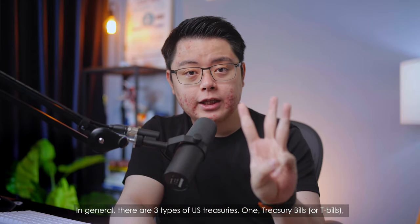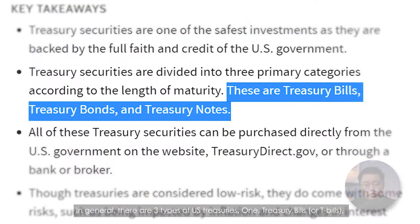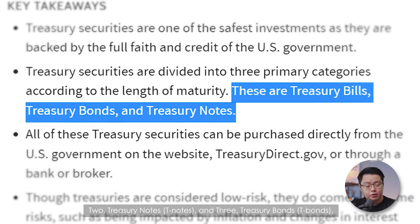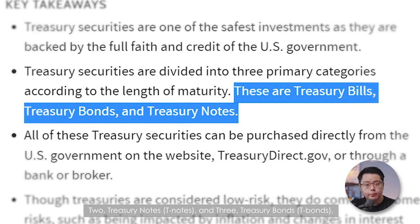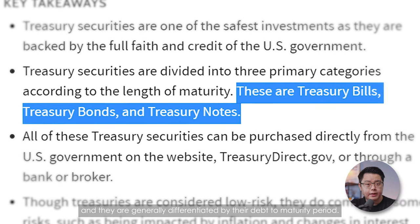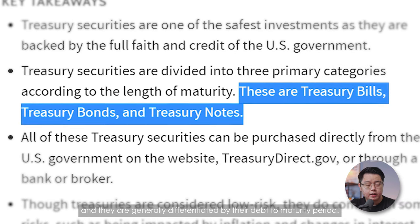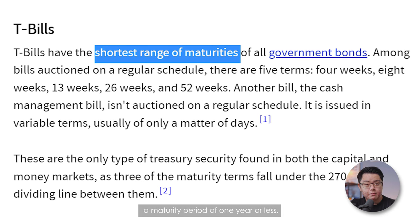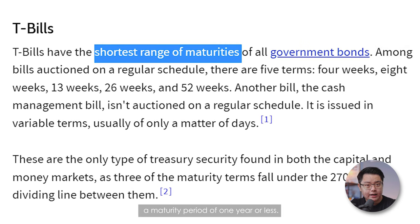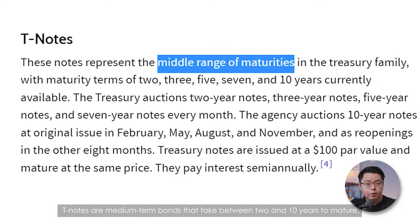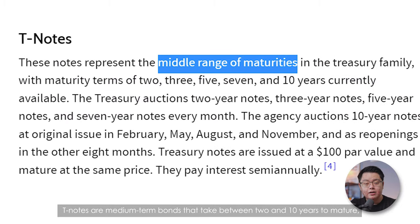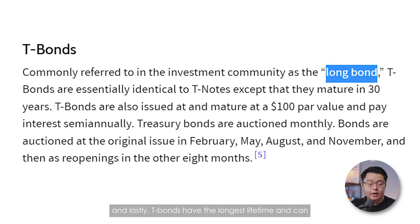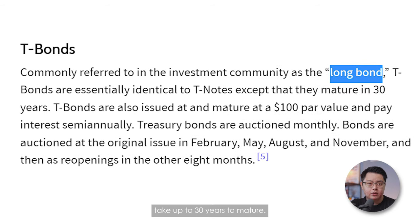So in general, there are 3 types of US treasuries: 1. Treasury Bills or T-Bills, 2. Treasury Notes or T-Notes, and 3. Treasury Bonds or T-Bonds, and they are generally differentiated by their time-to-maturity period. T-Bills are short-term bonds with a maturity period of 1 year or less. T-Notes are medium-term bonds that take between 2 and 10 years to mature, and T-Bonds have the longest lifetime and can take up to 30 years to mature.